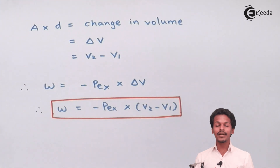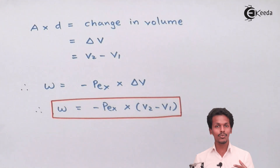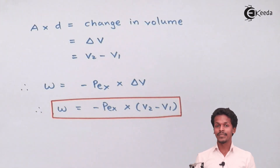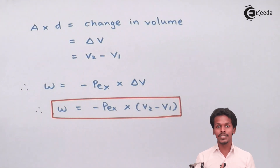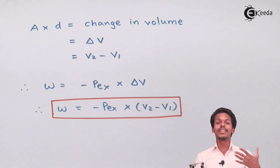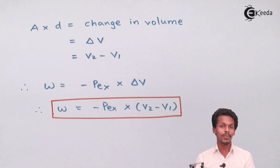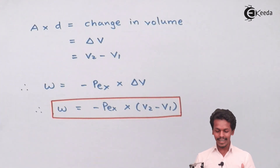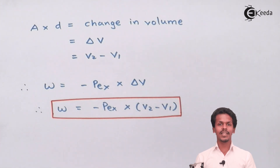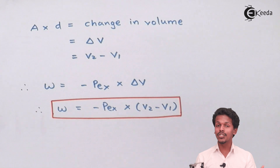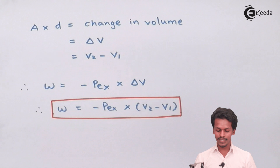From the final equation, we can clearly see that work is dependent on the change in volume, but it is also dependent on the external pressure — not on the initial pressure of the gas itself. The opposing force, i.e., the external pressure, determines the work. If external pressure is higher, more work is done during expansion. If external pressure is zero, the work is also zero. We will now examine three special conditions.